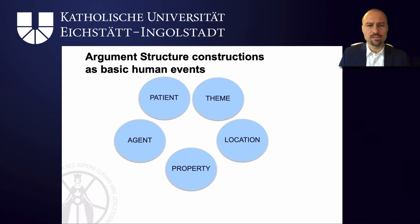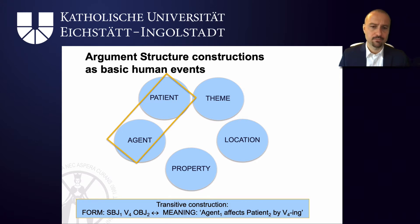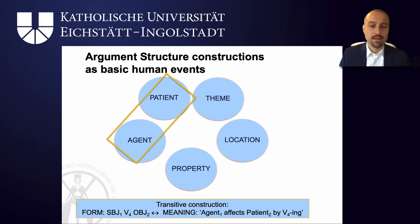You can also treat argument structure constructions as basic human events. Some of the basic participant roles that we have for scenes which we over and over encounter are agent, patient, theme, location, and property. A transitive construction — 'she kissed him', 'he sang a song', 'they opened a box' — all involve force dynamic transfer in which the agent exerts force onto a patient which is then affected by this action. The form side of this construction is subject, verb, and object; the meaning side links the subject to the agent slot, the object to the patient slot, and the verb slot specifies the specifics of the force transfer event.